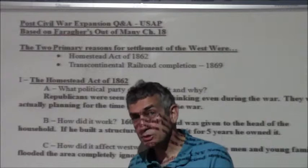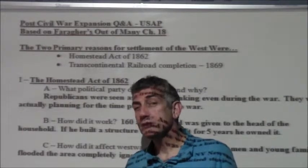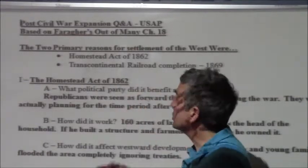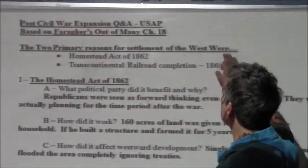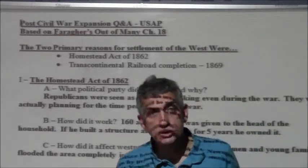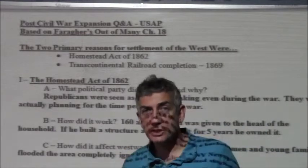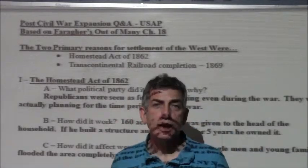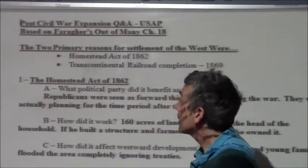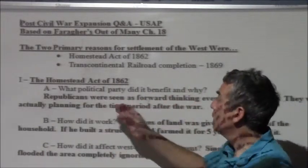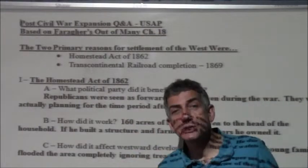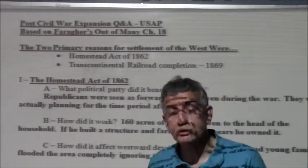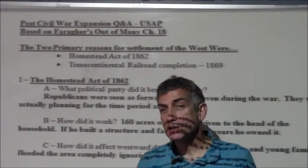This is post-Civil War expansion based on Faragher's Out of Many, chapter 18. Let's take a look at the series of questions and answers. The two primary reasons for settlement of the West were the Homestead Act of 1862 and the Pacific Railway Act of 1862 — both occurred during the Civil War, showing Lincoln's forward thinking about what he hoped would happen after the war. Which political party did the Homestead Act benefit? The Republicans were the party in power throughout the 1860s.